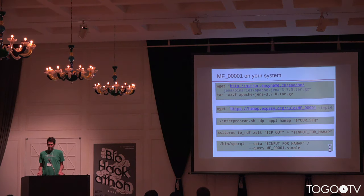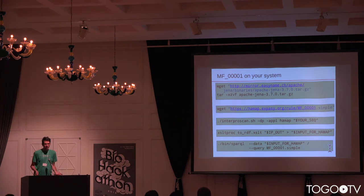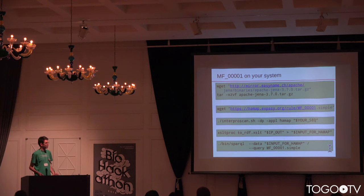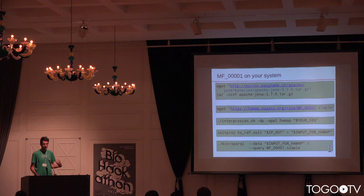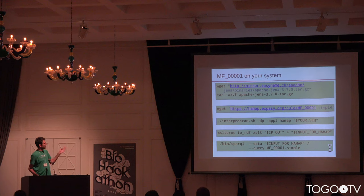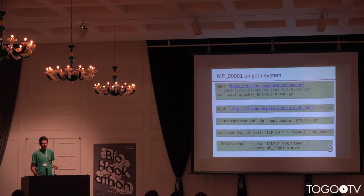For the first time, this is no longer a pipeline that only we can run. If you're annotating genomes — bacterial genomes, plant genomes, any microbial genomes — you can run this yourself and apply it to your own de novo sequenced proteins without very much work at all. You get a FASTA file, throw it through InterProScan, and translate the InterProScan results into a very simple RDF.